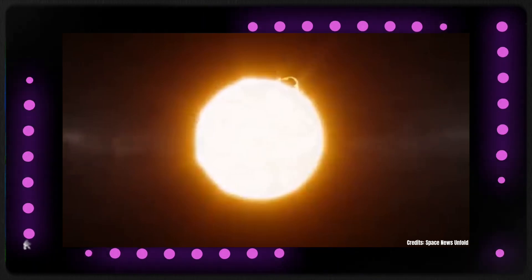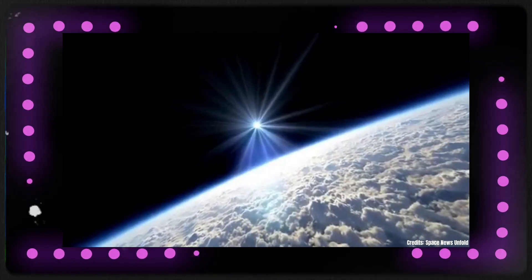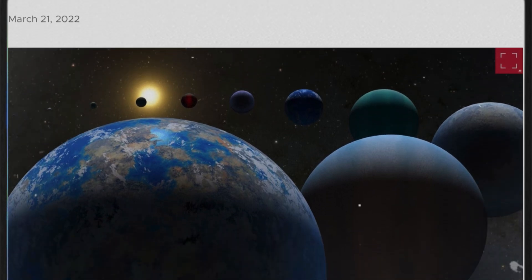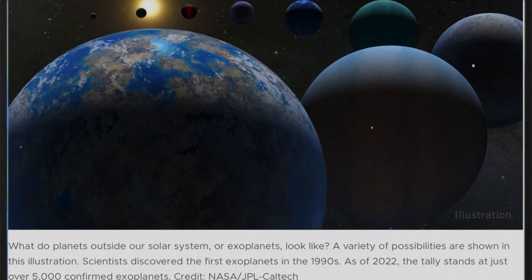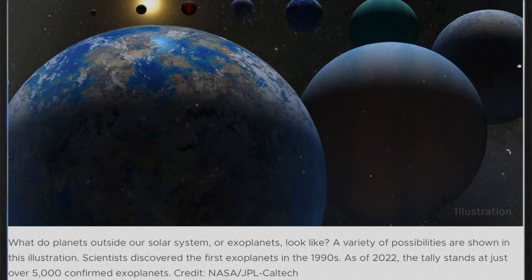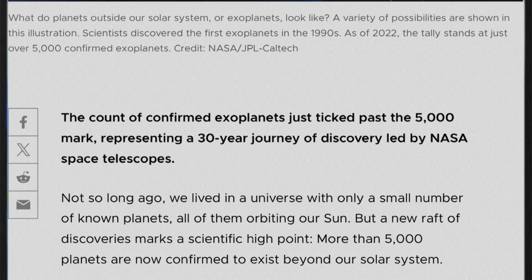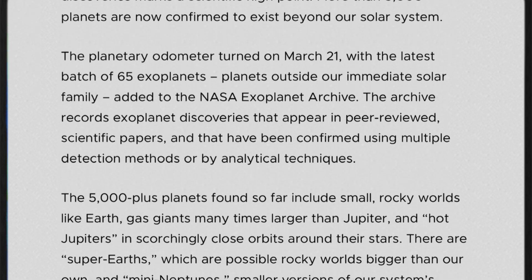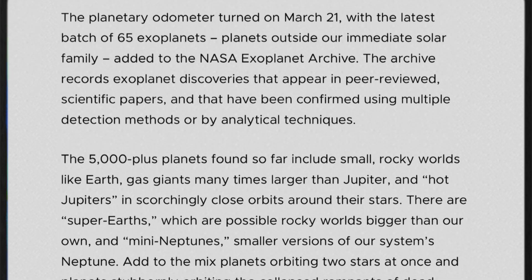There are countless unknown planets scattered across our universe. So far, we have discovered an impressive 4,935 exoplanets, with a recent addition of 65 new planets, bringing the total to 5,000. These 65 exoplanets were officially added to the NASA Exoplanet Archive on March 21st of this year, marking a significant milestone.